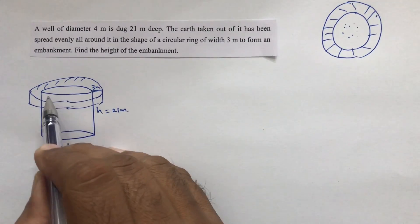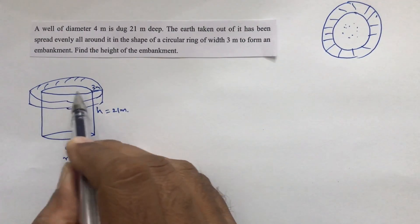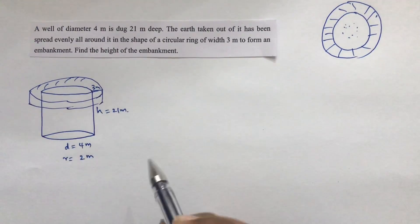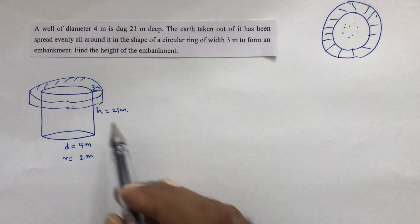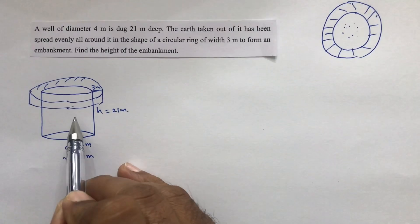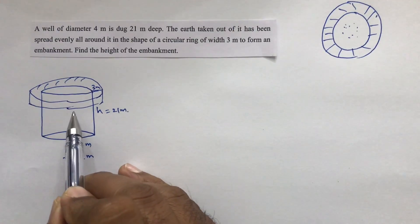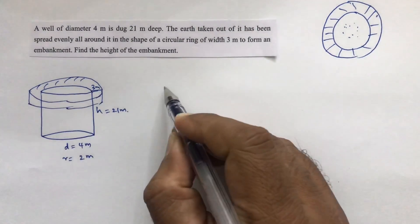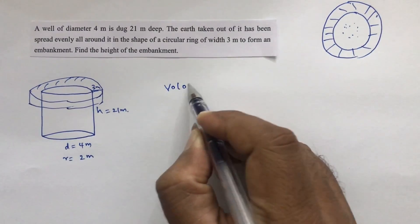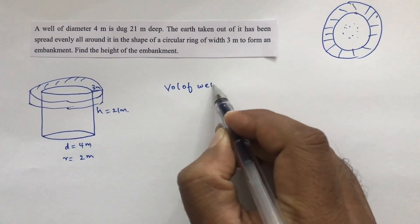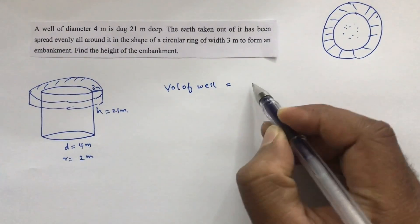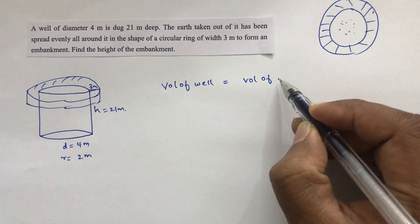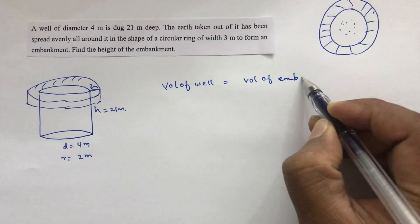The embankment is like a boundary wall made around the well so small children don't fall in. The earth taken out from the well is used to make the embankment, so volume of well equals volume of embankment.